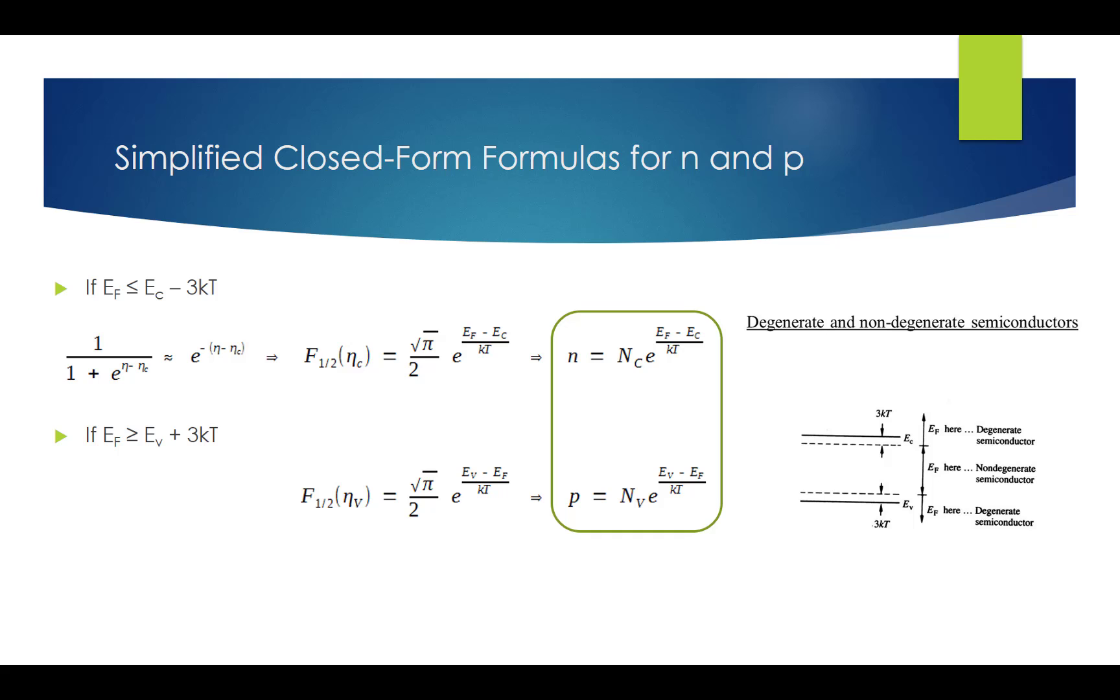Fortunately, simplified expressions are available and can be used in the vast majority of practical problems. To be specific, if E_F is restricted to values less than or equal to E_C minus 3kT, then n can be simplified to this much simpler expression. On the other hand, if E_F is greater than or equal to E_V plus 3kT, then p can be simplified to this expression.